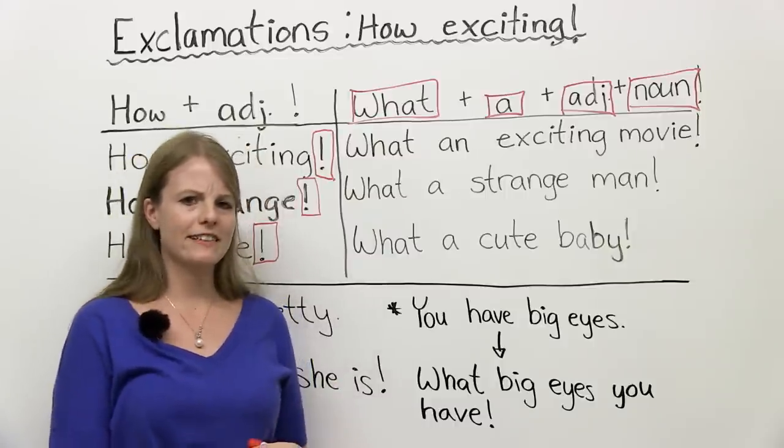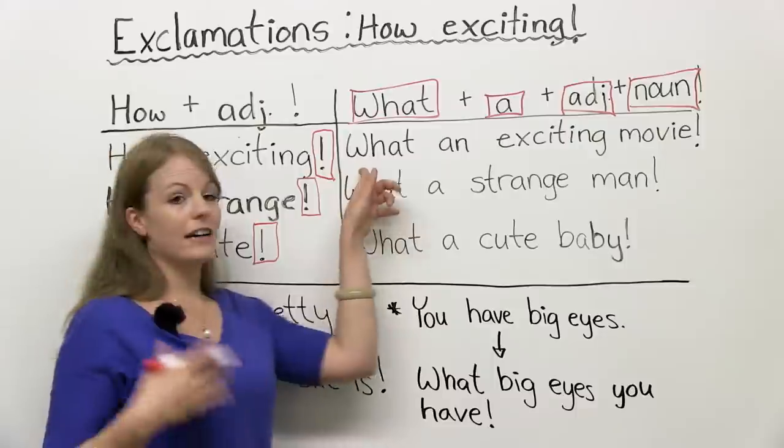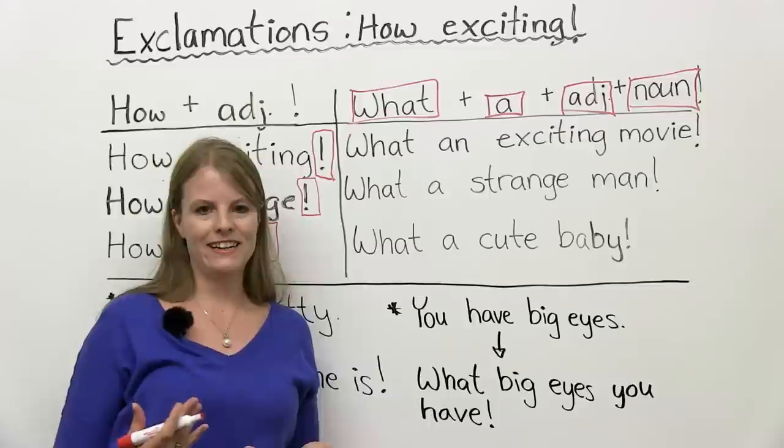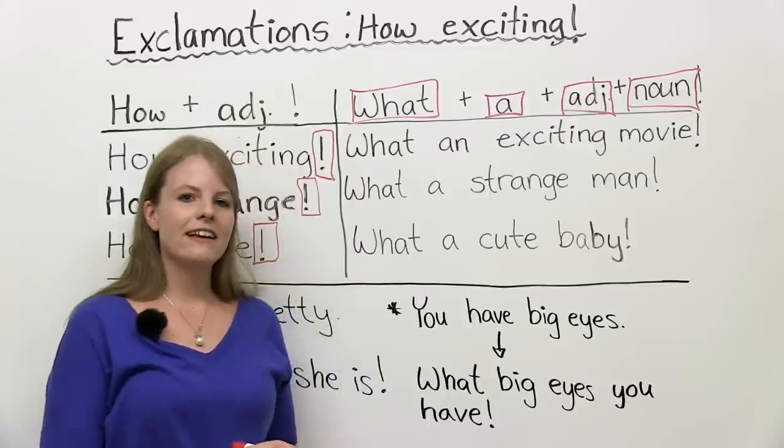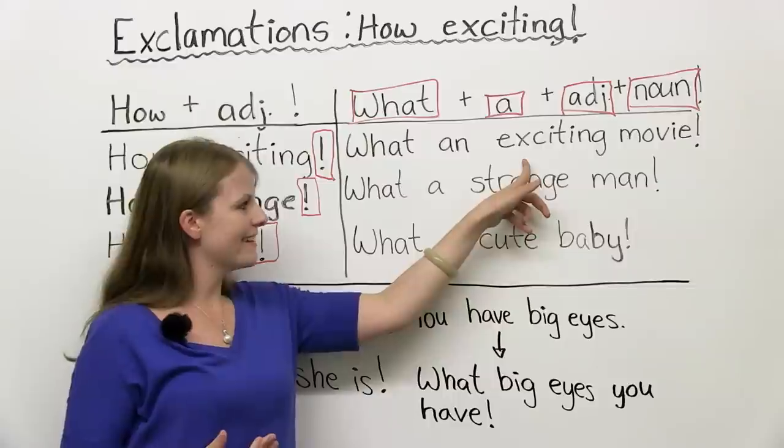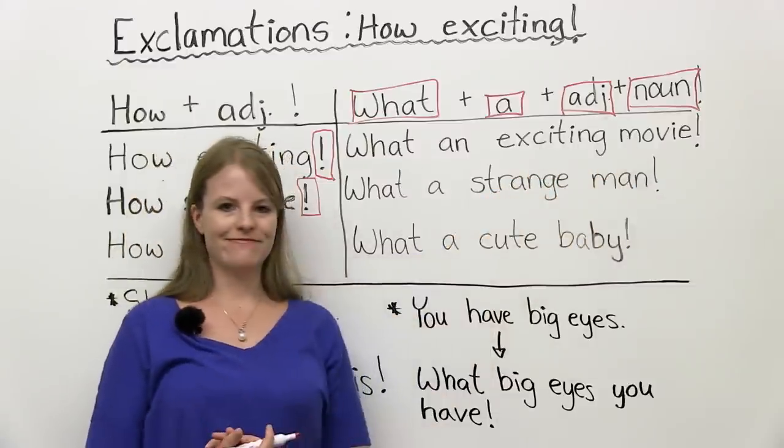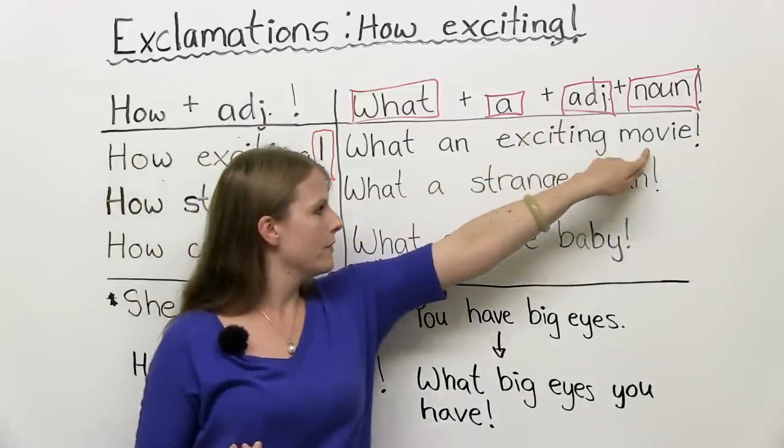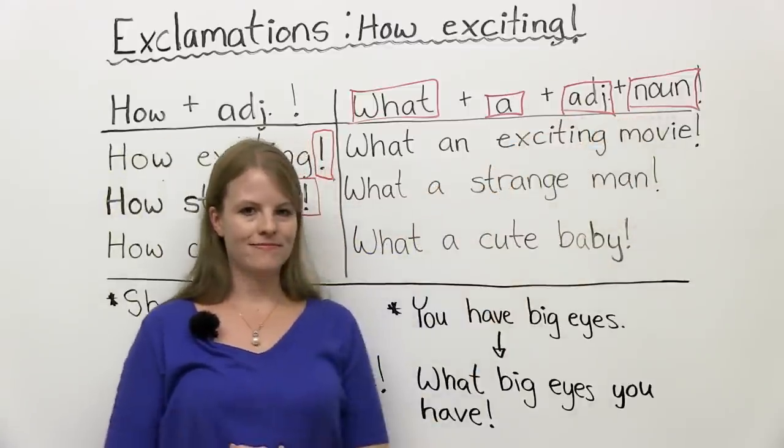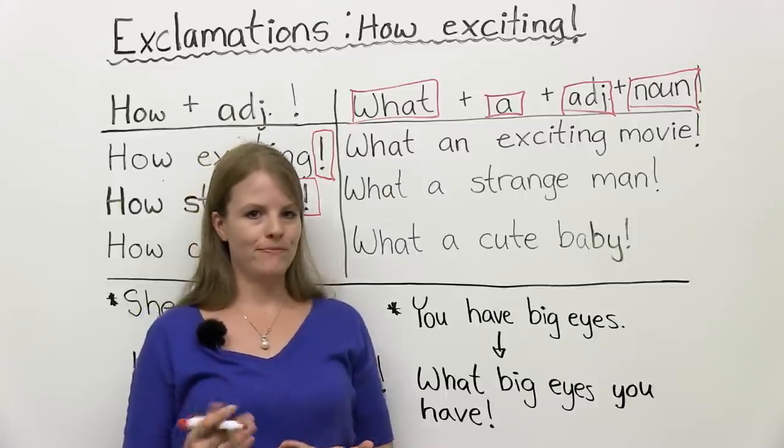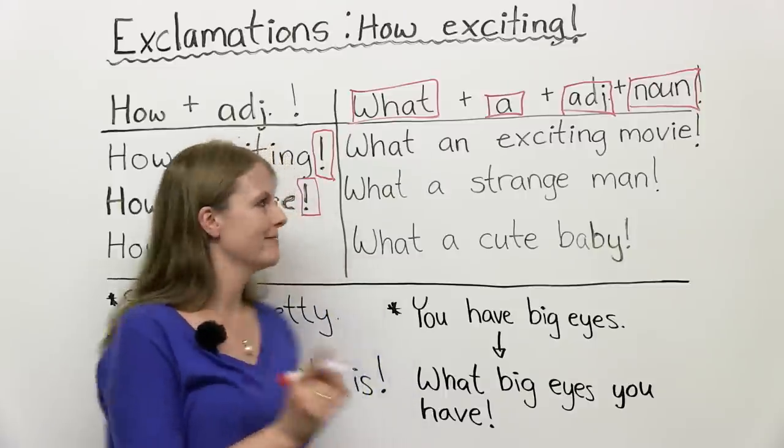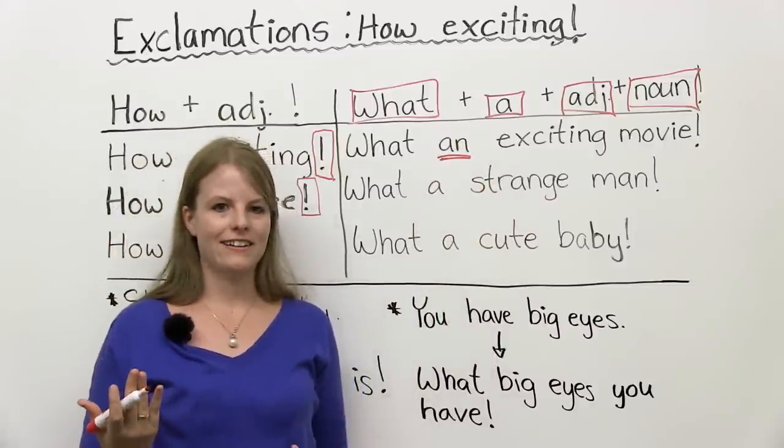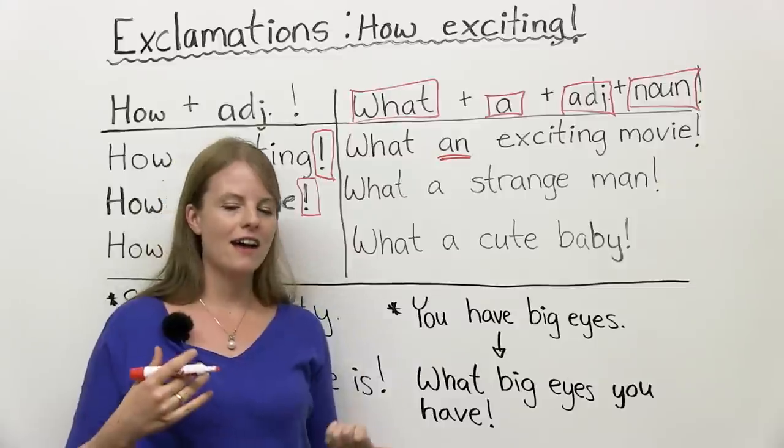So what are some examples of this? If I saw a movie, I really like this movie. Maybe it's an action movie. At the end, I might say, wow, what an exciting movie. Exciting is your adjective. Movie is your noun. In this case, there is no verb. But you have to be careful. You must remember a or an. So it's either what a, what an.